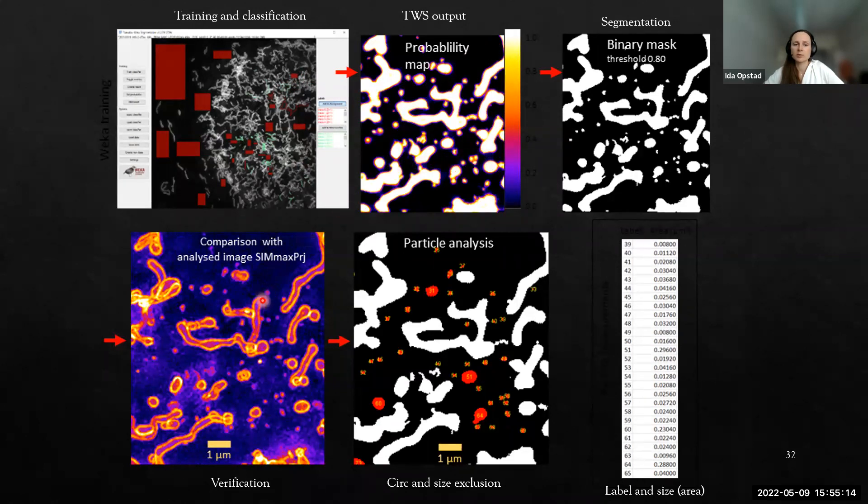Then I did a thresholding of this probability map such that compared to the SIM image, the size of the vesicles looked reasonable how I see the image. I ended up using a threshold of 0.8 for this classifier for all images. I just used the same classifier for fixed and live cells as well, and it seemed to work well.